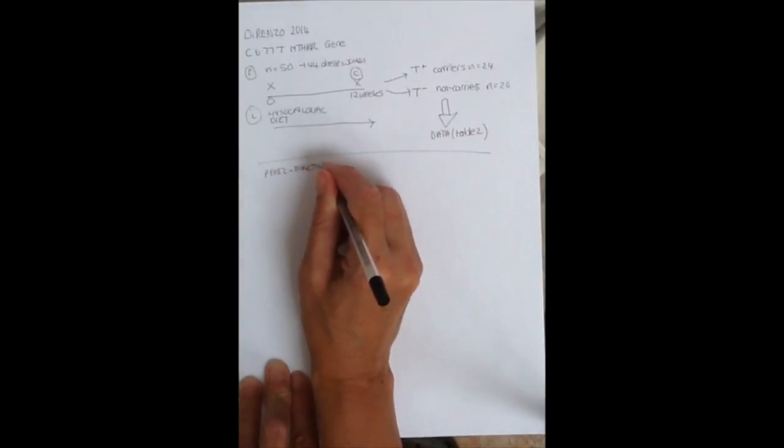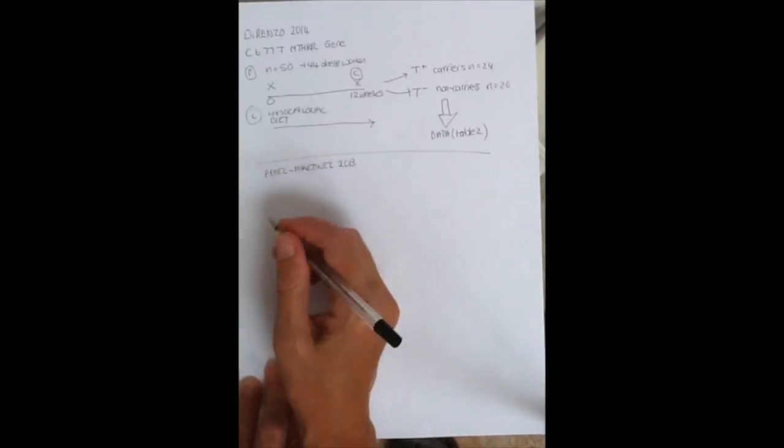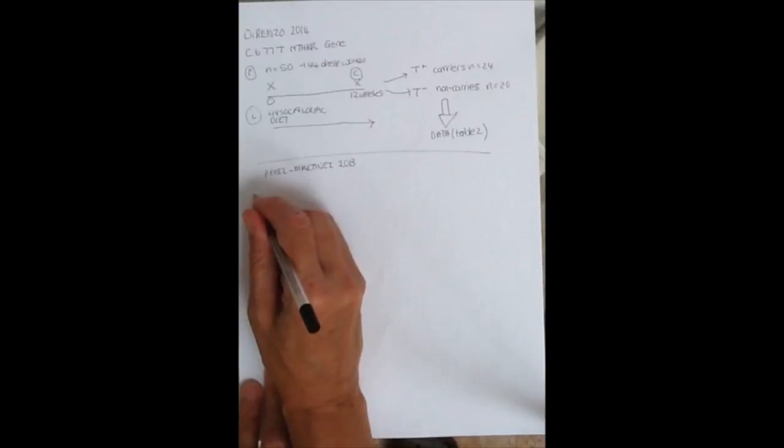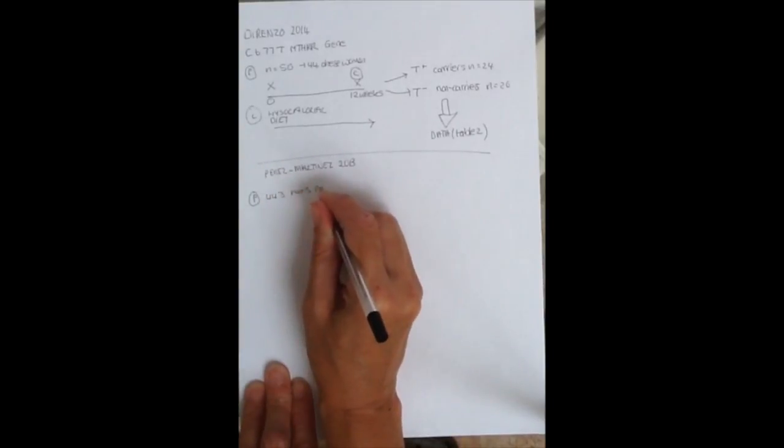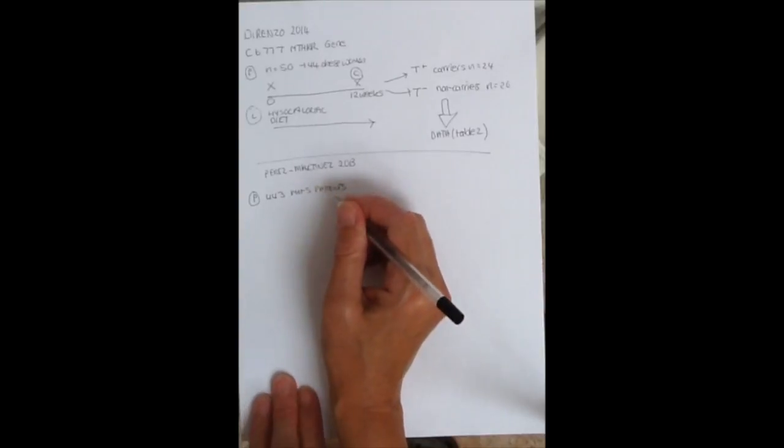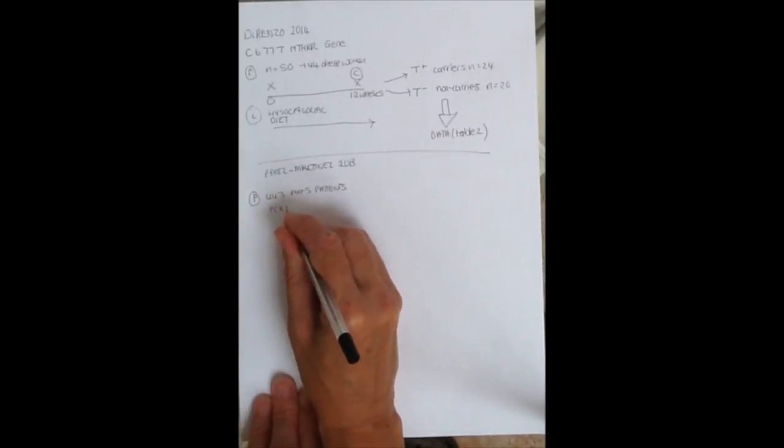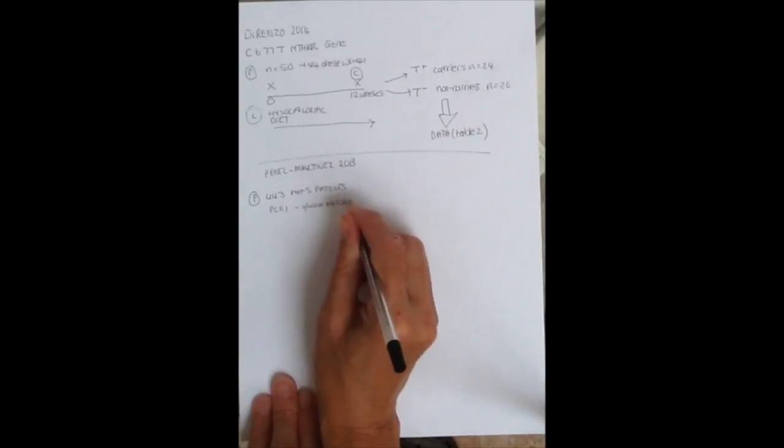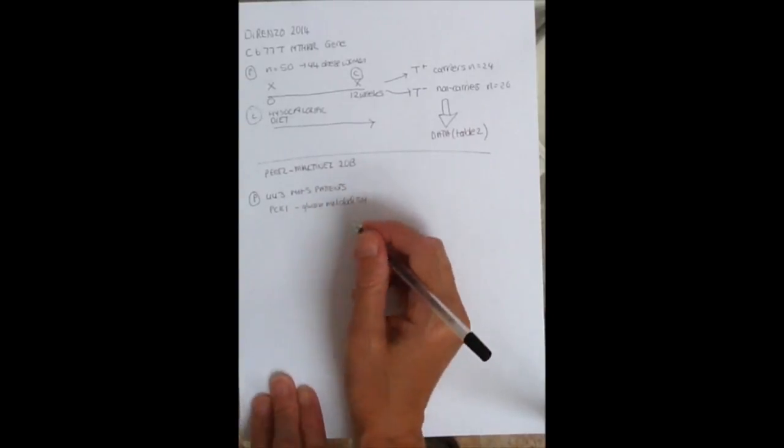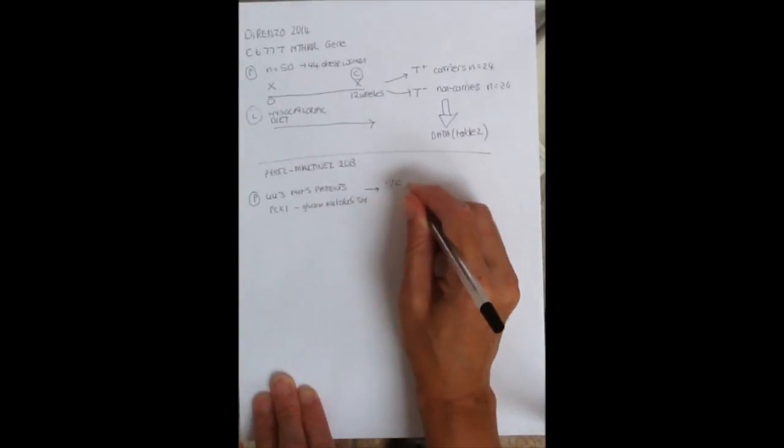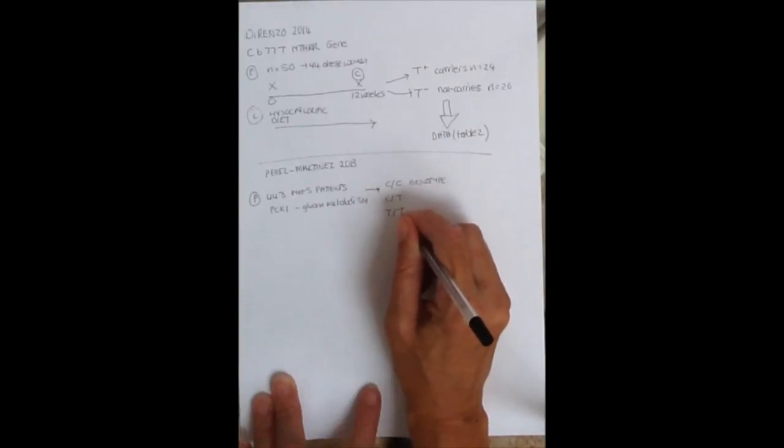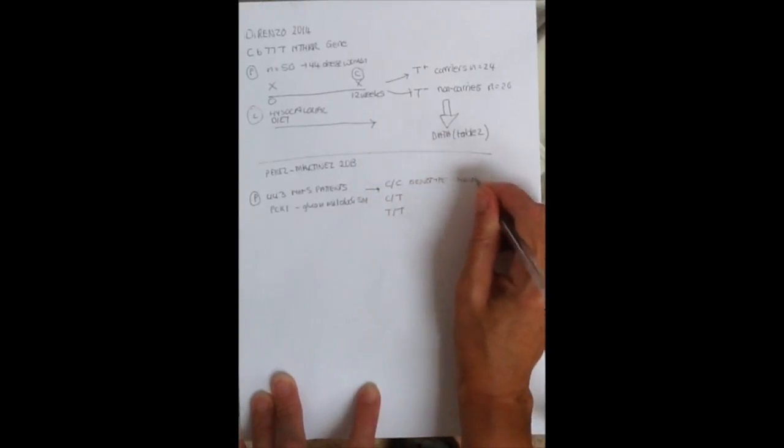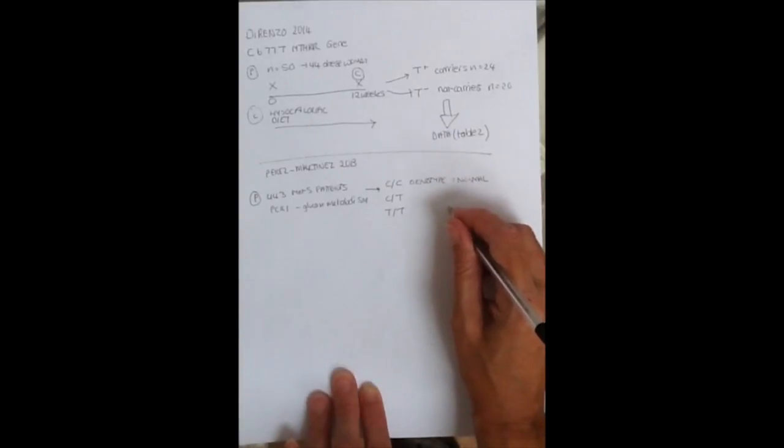So example of the second paper. Again, I'm just scribbling down the population. In this one, it's part of that big trial. There's 443 metabolic syndrome patients. I've just jotted down the gene there that they're interested in. It's related to MTHFR and it's a gene involved in glucose metabolism.